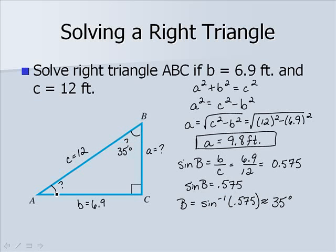Once we found B, A is relatively easy. Since they add up to be 90 degrees, side A will be 90 degrees minus side B, or 35 degrees. We get a value for A of 55 degrees.